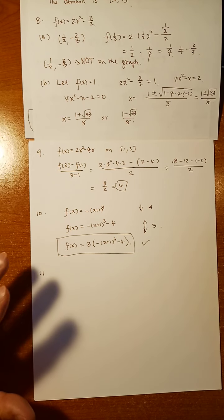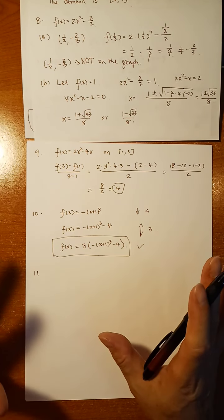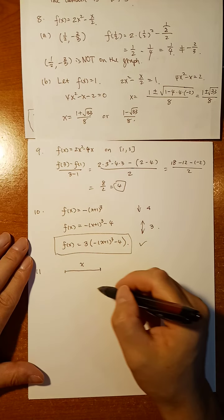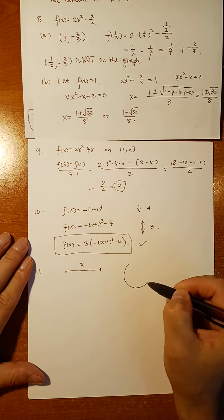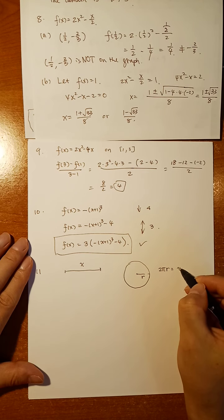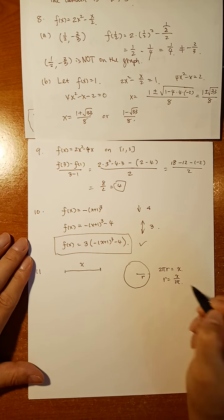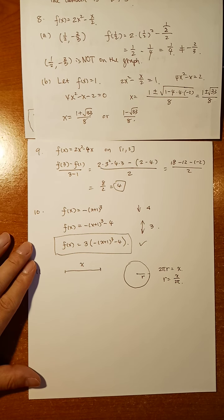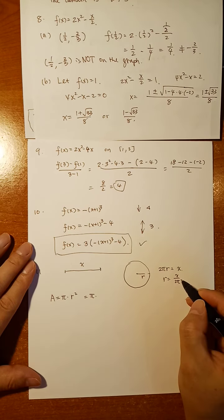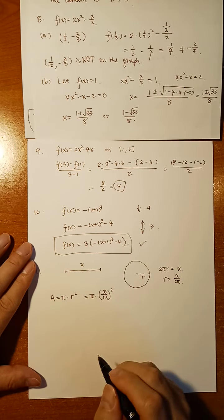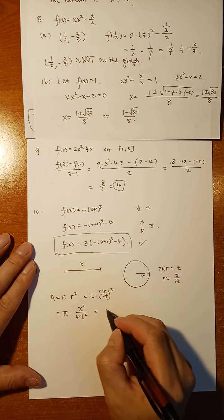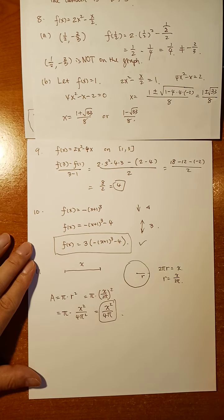Problem 11: assume you have a wire of length x that you form into a circle — so x is the circumference. A circle has radius r, and circumference equals 2πr, so r equals x over 2π. The area of the circle in terms of x is π times r squared, which is π times (x over 2π) squared. That's π times x squared over 4π squared. Canceling one π gives x squared over 4π. This is the answer.